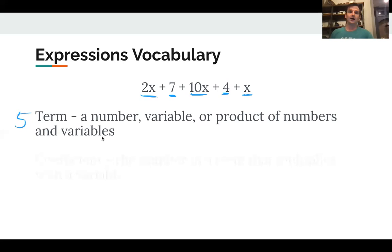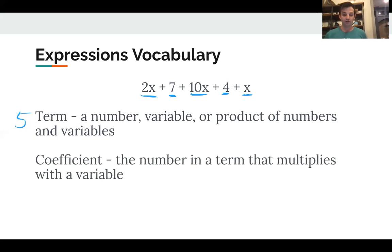A coefficient is another piece of vocab. So the coefficient, there are three coefficients in this problem. The coefficient is the number in a term that multiplies with a variable. There's a coefficient here, 2, because it's 2 times x. There's a coefficient here of 10. And there's a coefficient here. So this is very important to remember. A variable by itself, like x in this case, has a coefficient of 1. Again, I'll say a variable by itself has a coefficient of 1.